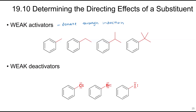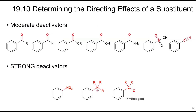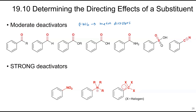Halogens are weak deactivators. Moderate deactivators include ketones, aldehydes, esters, carboxylic acids, amides, sulfonates, and nitriles — all of which are electron withdrawing and are meta directors. Strong deactivators include the nitro group, carbons bonded to halogens, and positively charged nitrogen groups, all of which draw electron density out of the ring.